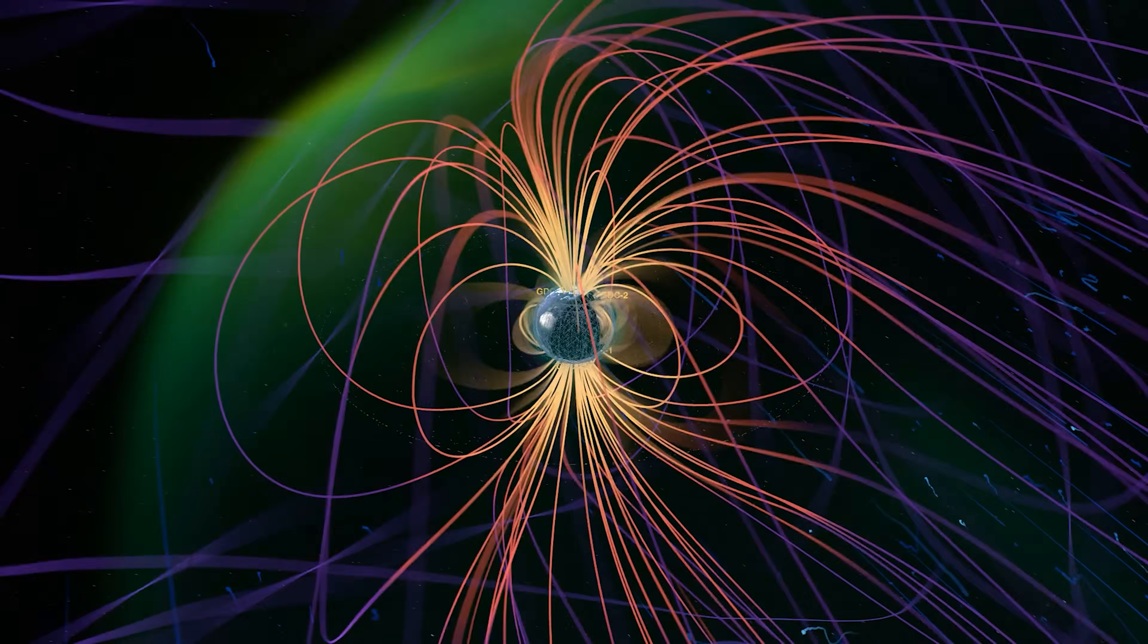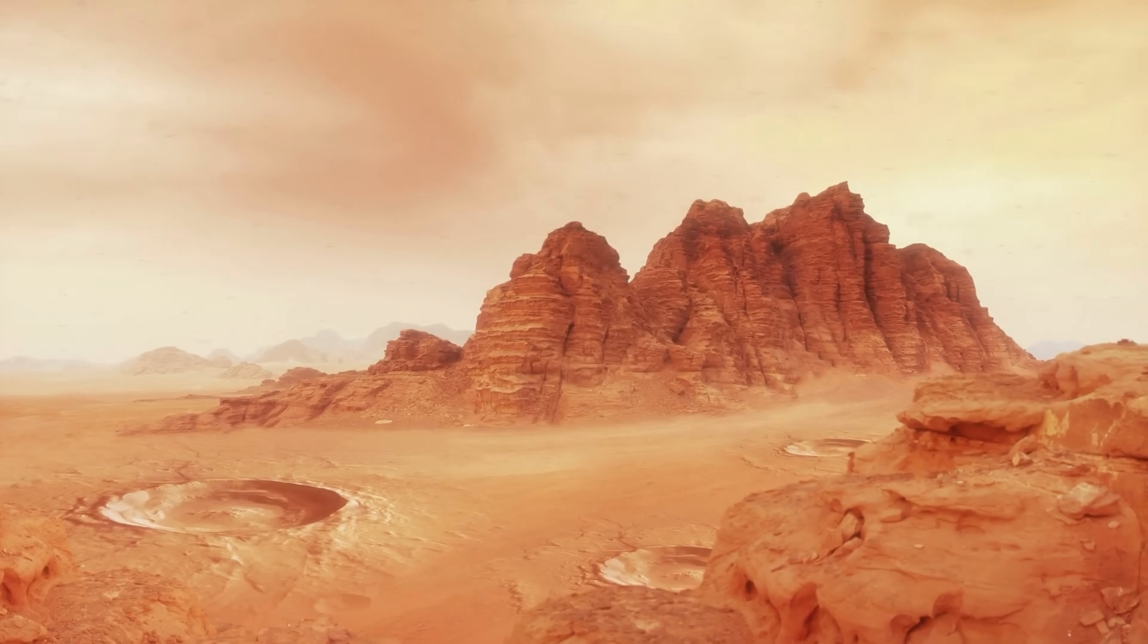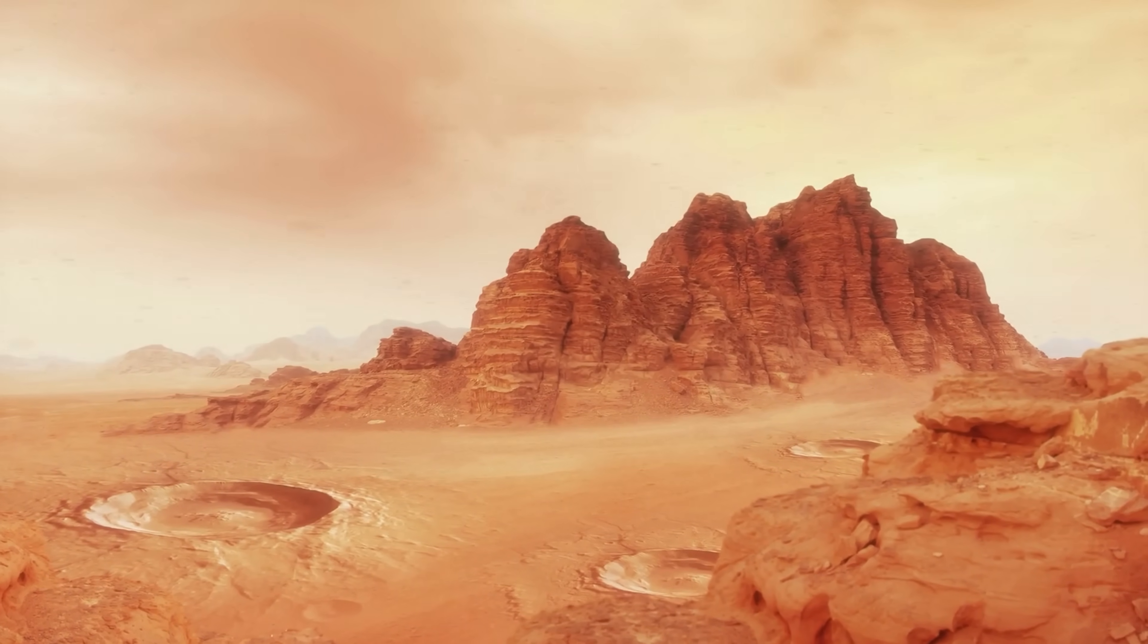If you want to know what our planet would look like if we didn't have this magnetic field defending us, just take a look at Mars: a barren, dry, lifeless world.